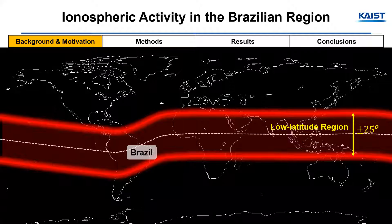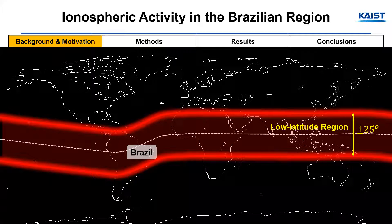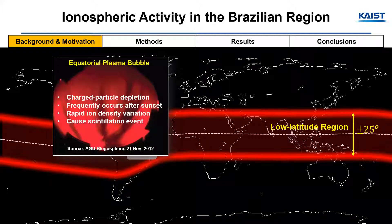The Honeywell GBAS system, which was originally configured with the ionospheric parameter and threat model for the CONUS, was installed at Galeão Airport in Brazil. However, ionospheric activity in the equatorial region, including the Brazilian region, is known to be significantly more intense than that encountered in mid-latitude regions. Thus, the CONUS ionospheric parameter and threat model should be validated before applying them to GBAS at Galeão Airport.